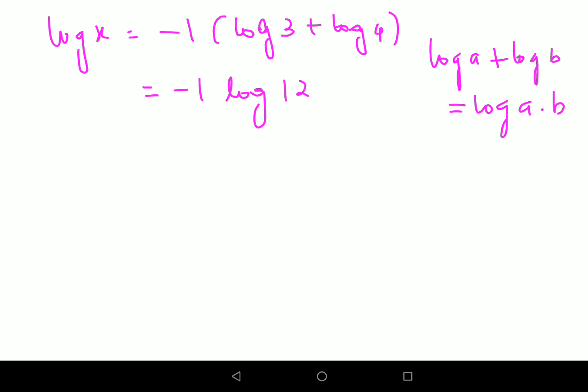And this is log x. Now you remember we had a log of m to the power a, which can be written as a log m. So using this, log x equals to log 12 raised to minus 1. Now obviously the logs can be canceled and we can say that x equals to 12 raised to minus 1, or we can say it is 1 upon 12.